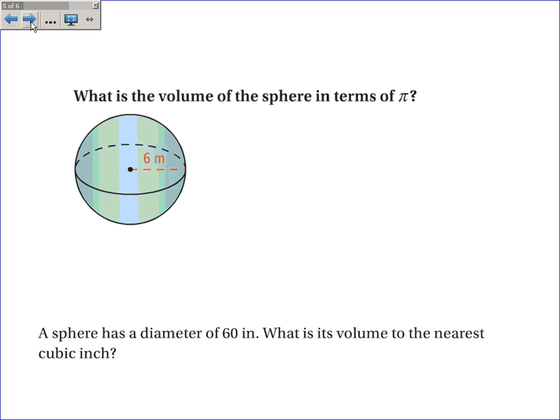Okay, so what is the volume of the sphere in terms of pi? Well, the volume is 4 thirds pi r cubed. The radius is 6. So 4 thirds pi times 6 cubed. Now, to find it in terms of pi, I will kind of forget about pi for a second and do 4 thirds times 6 to the third power.